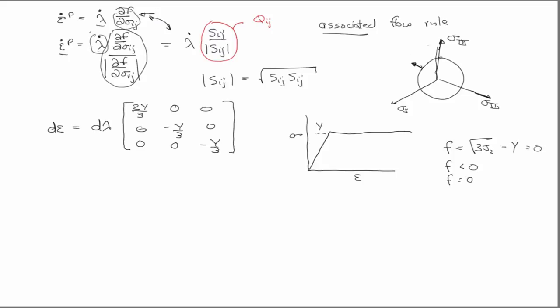And so what that means geometrically, if we look at our drawing up here, is that the state of stress is either inside the yield surface, in which case it's elastic, or it's sitting on the yield surface, in which case it's plastic. So it cannot be out here, outside the yield surface. And in the situation that it is, we use this flow rule and this multiplier to return it to the yield surface.